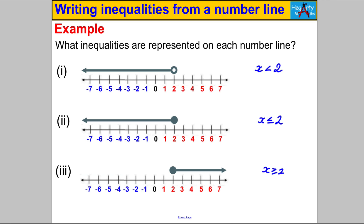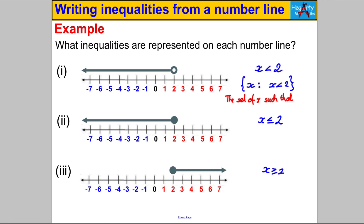I'm going to show you two other ways of writing that, which you'll sometimes see in textbooks and tests. One is called set notation — it has these curly brackets, an X, and a colon. The colon means 'such that', so this reads: the set of X such that X is less than 2. You write exactly what you did before but enclosed in those brackets. It's important that you're familiar with that notation.